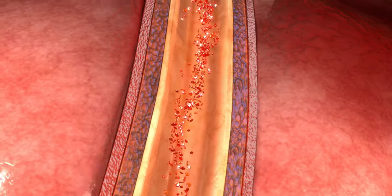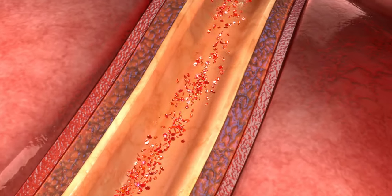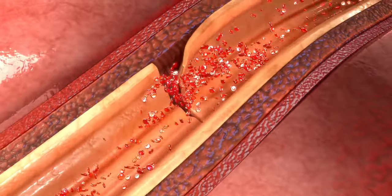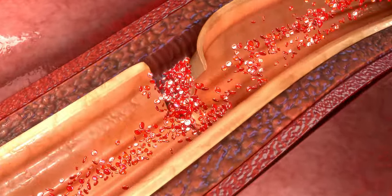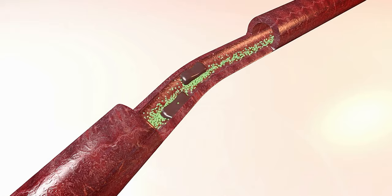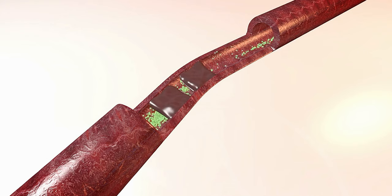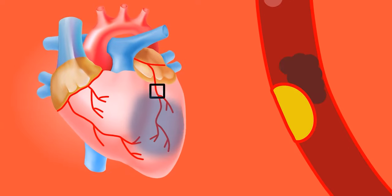What actually happens here? For some unknown reasons, there is a small tear that develops in the wall of the artery, which is quite nicely depicted in this animation. The tear develops, causing disturbances in blood flow and the build-up of clot, which then manifests as a heart attack, with a lack of blood and oxygen getting to the heart muscle.